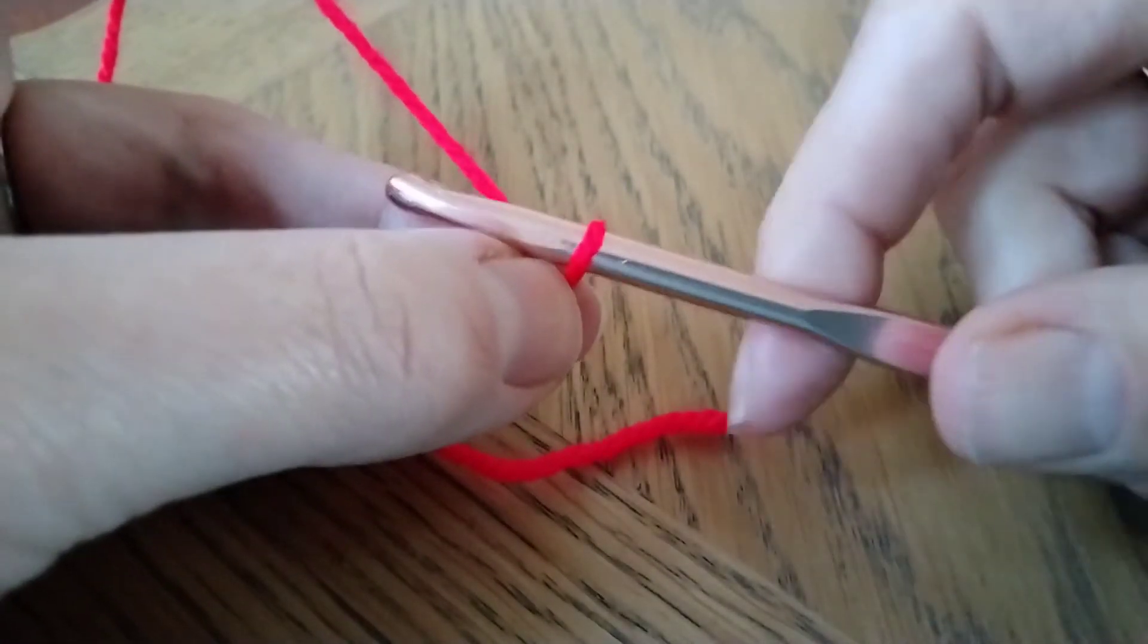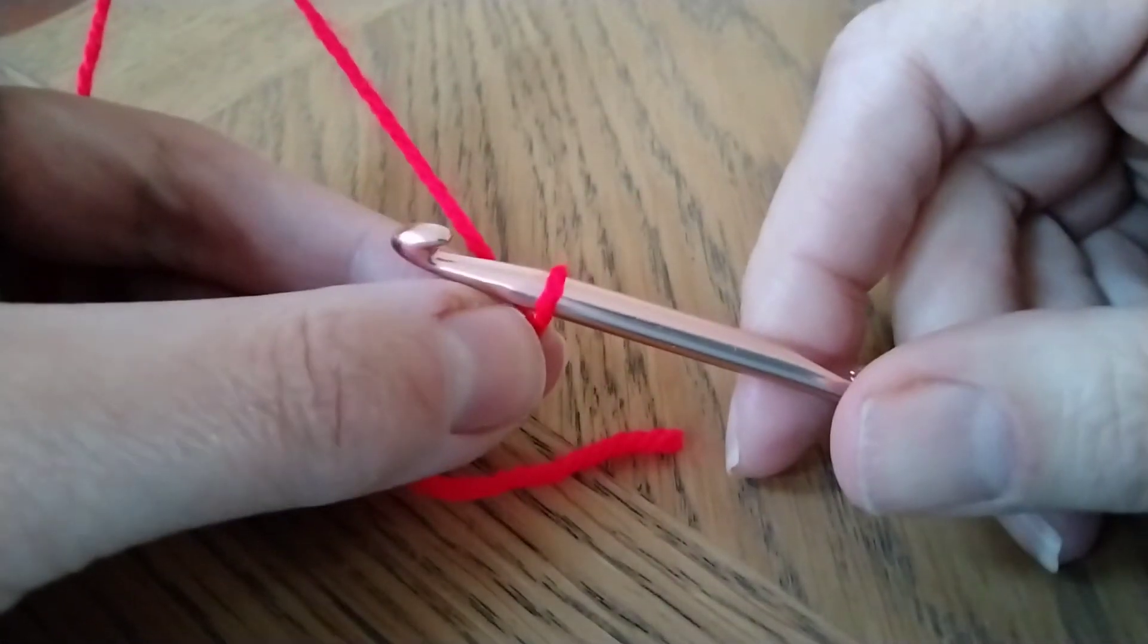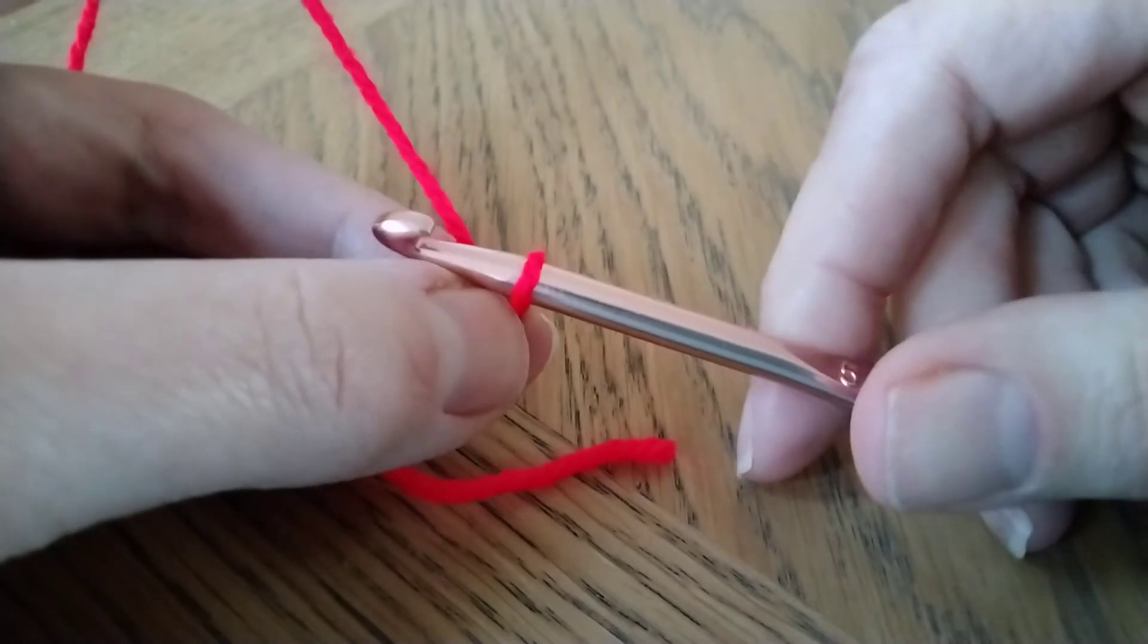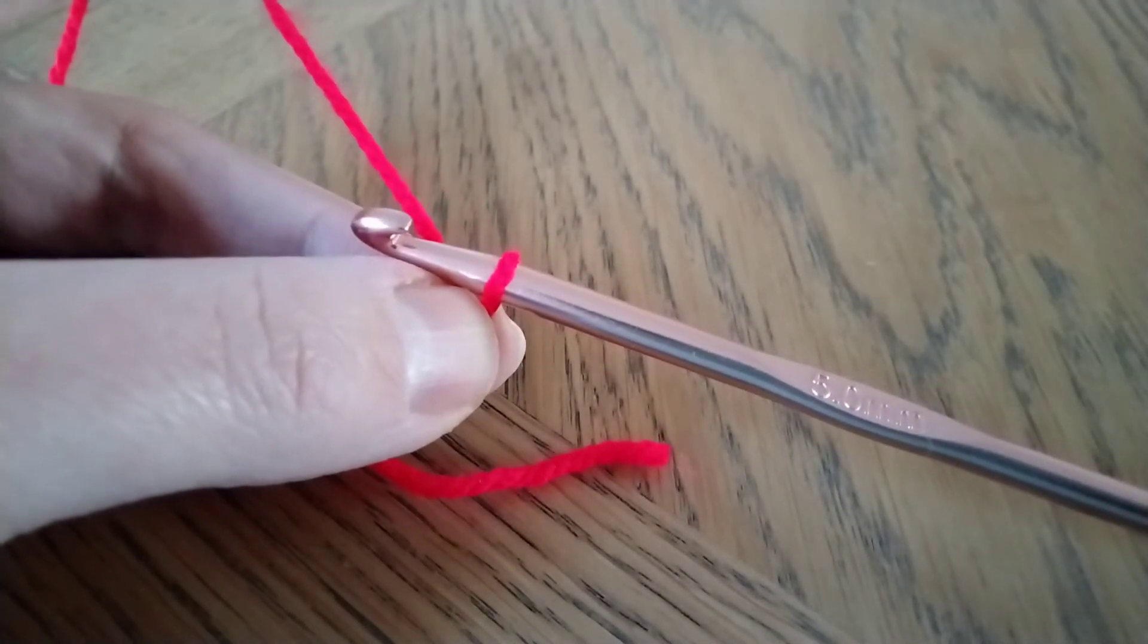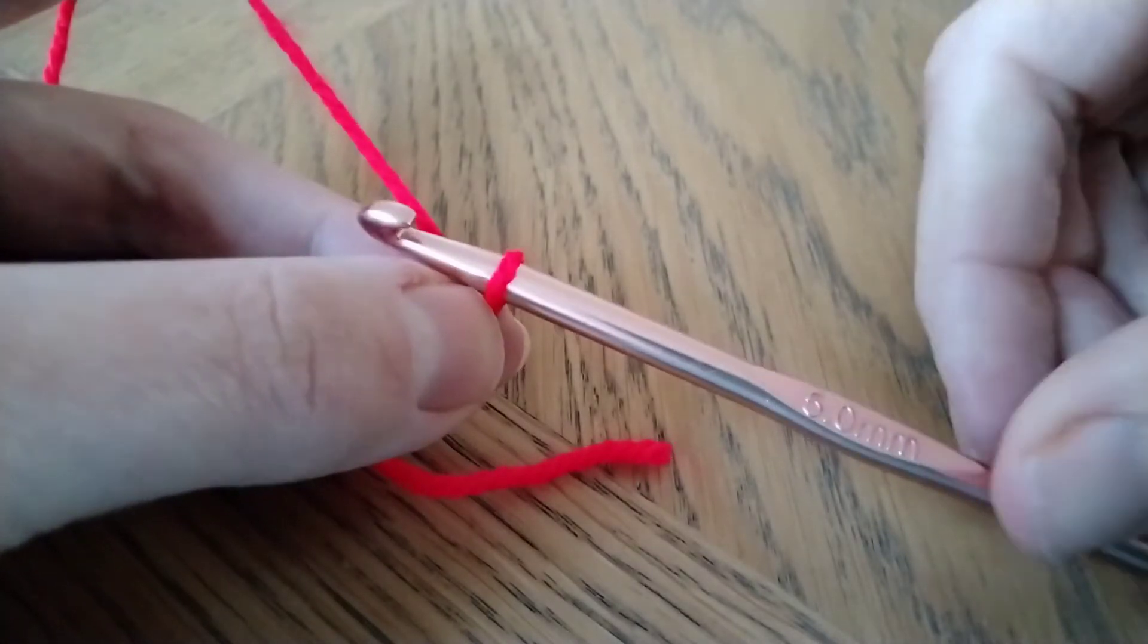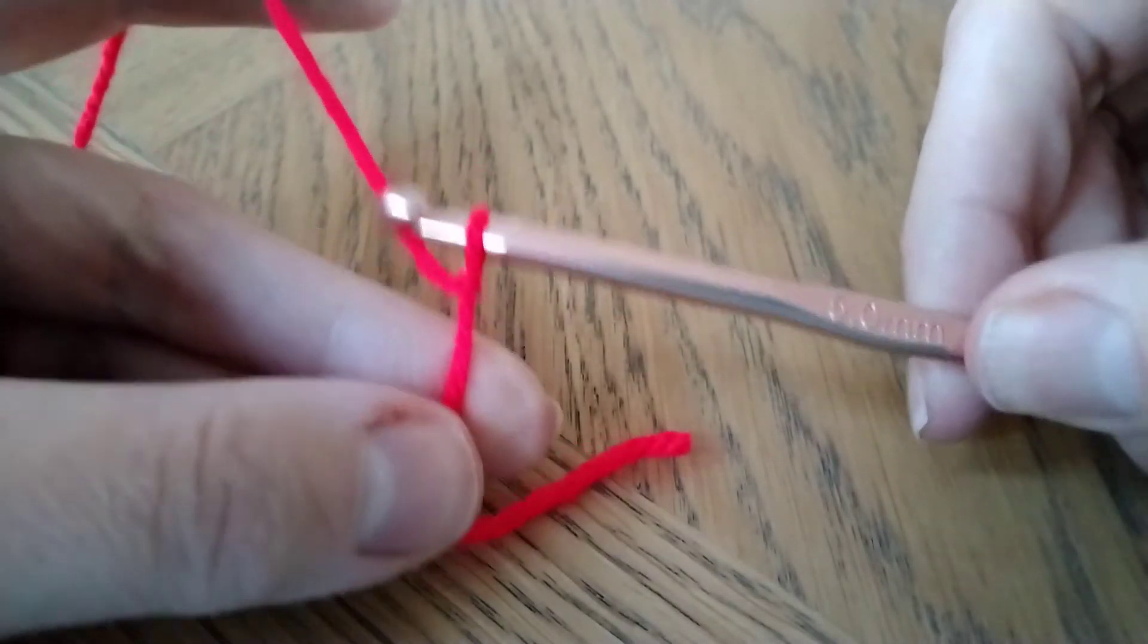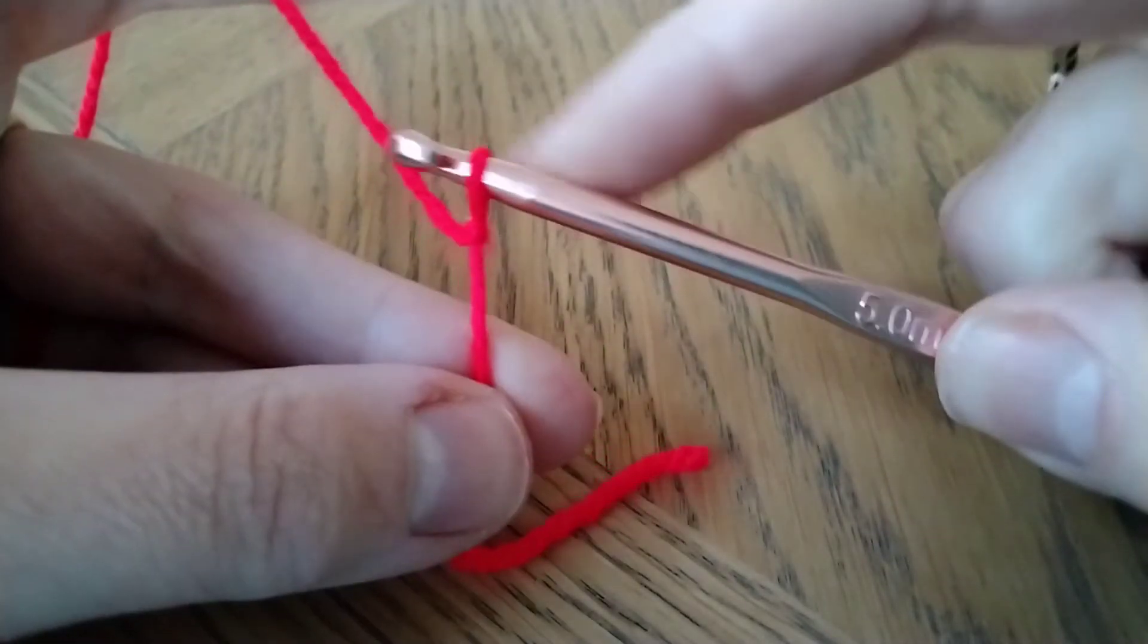Okay, so now we've learned how to do our slip knot, we're going to make our chain, which is the foundation of any flat piece of crochet that you would do. So you've got your hook through your slip knot.